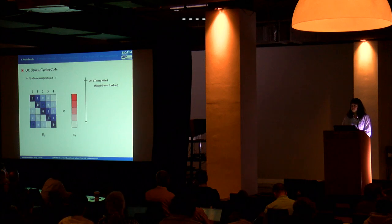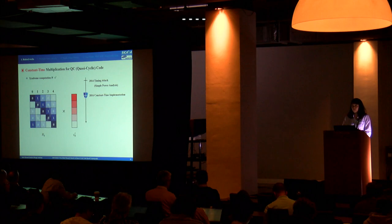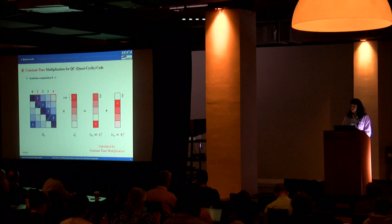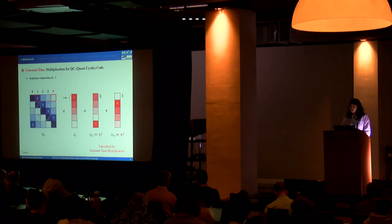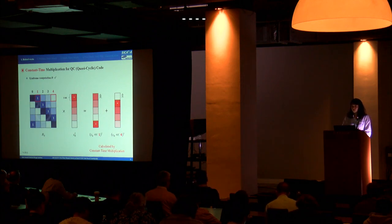However, the syndrome computation, which is the main operation of QC code-based cryptography, has been reported to be vulnerable to timing attacks. Accordingly, Chou suggested a constant-time multiplication for QC code-based cryptography to mitigate timing attacks. The first row of H0 can represent the whole matrix, and an array of indices with value 1 is enough to represent H0. Thus, the multiplication of sub-matrices can be calculated as the sum of vectors left-rotated by the index value, computed in constant time.